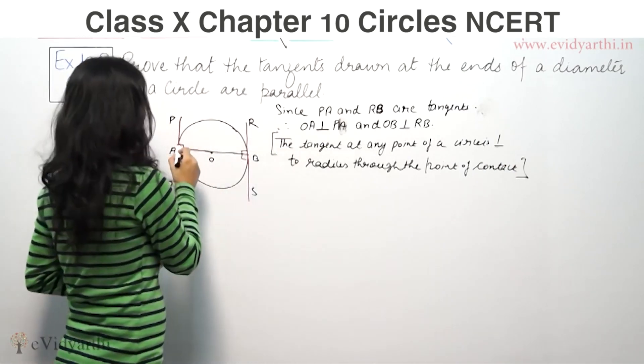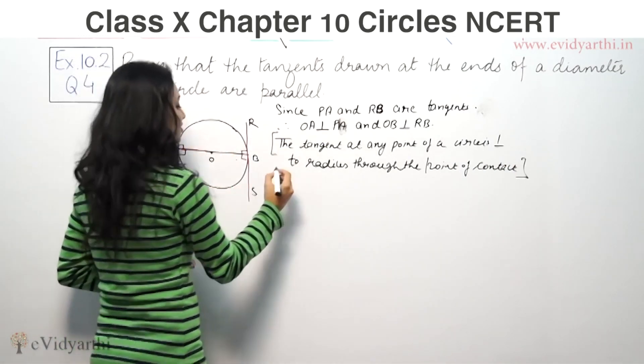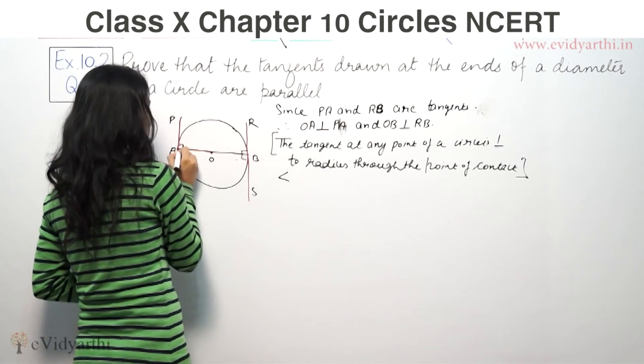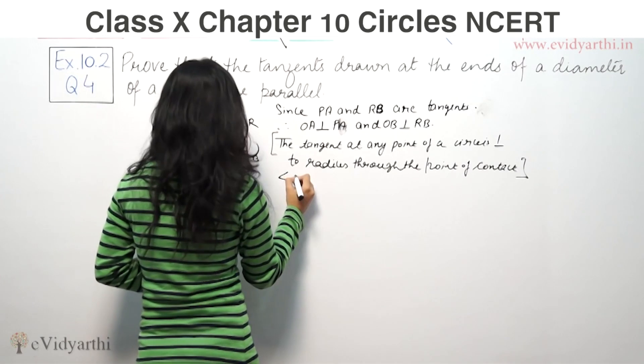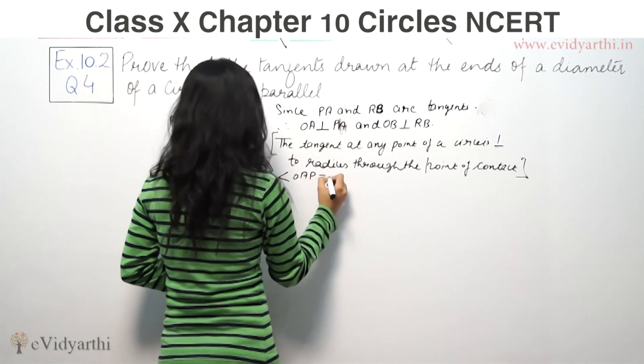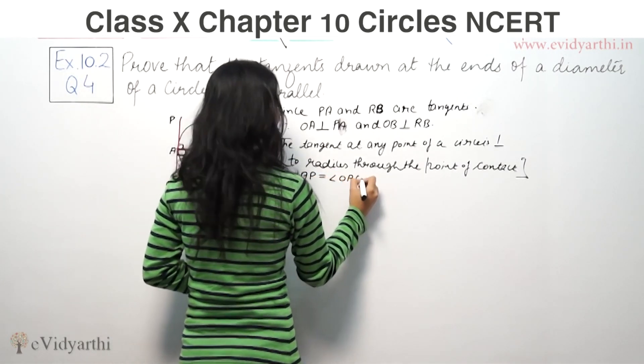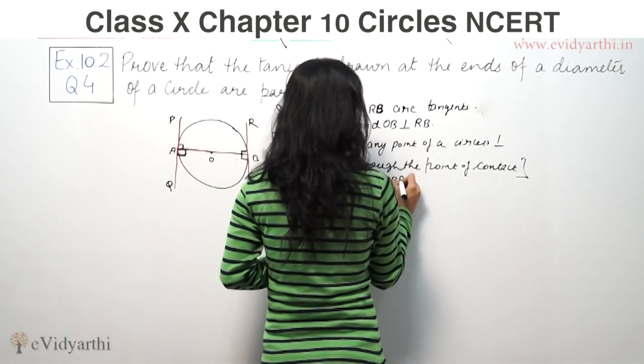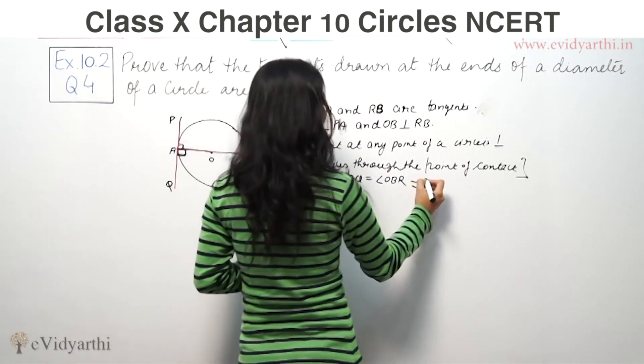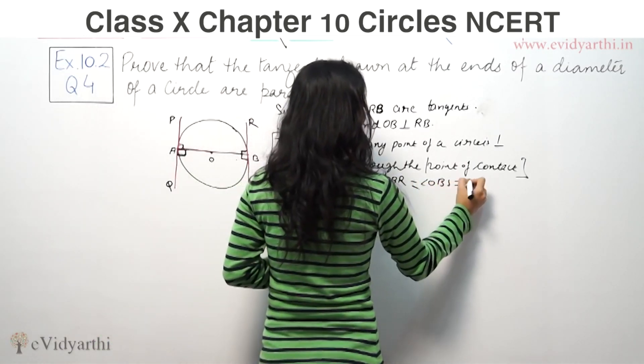So here we have angles of 90 degrees. If you have angle 90 here, this is a straight line here, this is 90, this is 90, so this is 90. Now angle OAP is equal to angle OAQ is equal to angle OBR is equal to angle OBS is equal to 90 degrees.